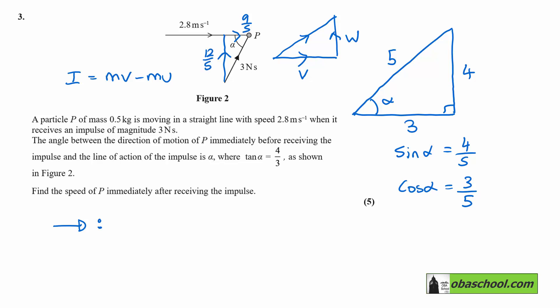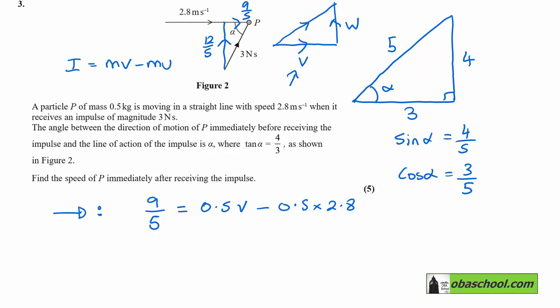So horizontally we have 9/5 equals 0.5V take away 0.5 times 2.8, where V is the final velocity that we defined here and 2.8 was the initial velocity horizontally that it had. So that gives us 0.5V is equal to 9/5 plus 0.5 times 2.8, which is 3.2, and then V is 3.2 divided by 0.5, which is 6.4.